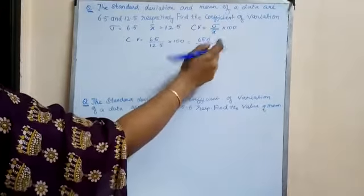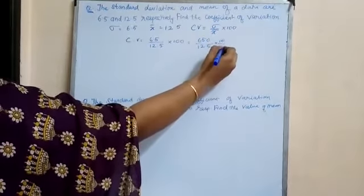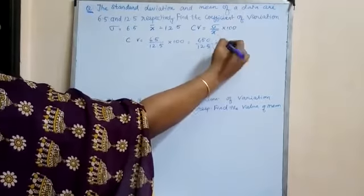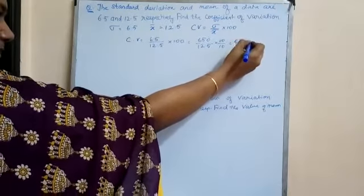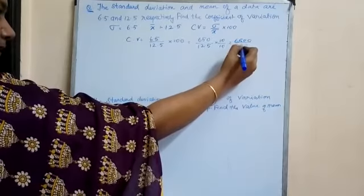In order to take out this decimal we can multiply it with 10 in both numerator and denominator. We get 650 divided by 125.